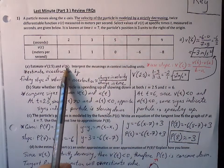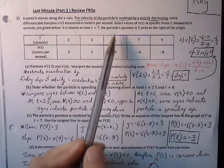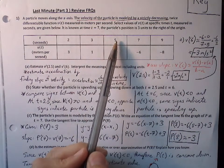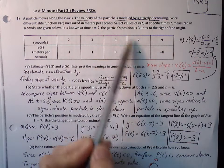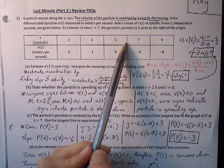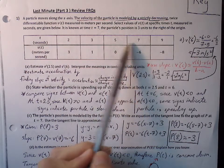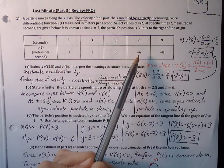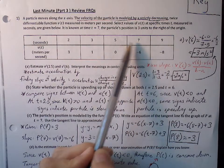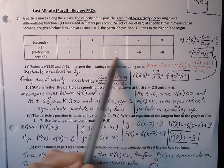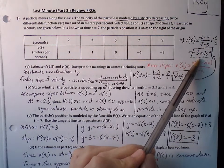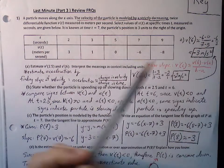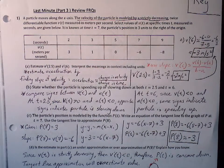For v prime of 6, we want to find the slope of velocity at 6. Our best approximation uses the two ordered pairs closest to it: change in velocity over change in time is (negative 6 minus 0) over (7 minus 5), which is negative 6 over 2, giving us negative 3 meters per second squared.